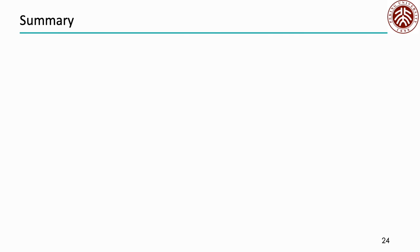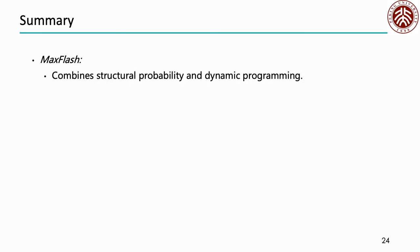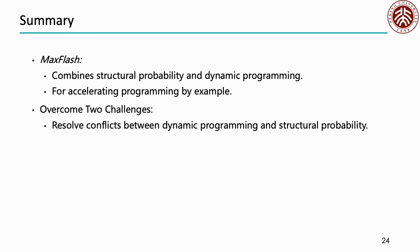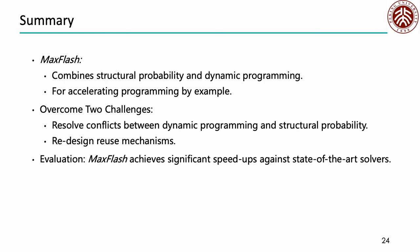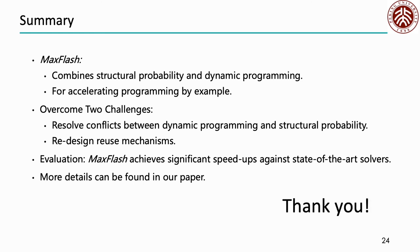Let's make a summary. In this paper, we design MaxFlash, which combines structural probability and dynamic programming for accelerating programming by example. To achieve an efficient combination, we resolve conflicts between dynamic programming and structural probability, and we also redesign the reuse mechanisms. Our evaluation shows that MaxFlash achieves significant speed-ups against state-of-the-art solvers. Thanks for listening, and I'm glad to answer questions.